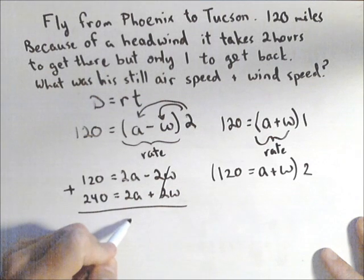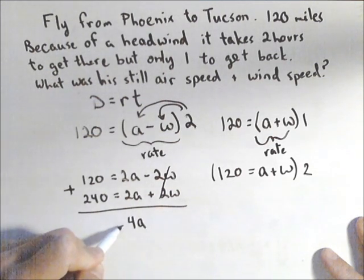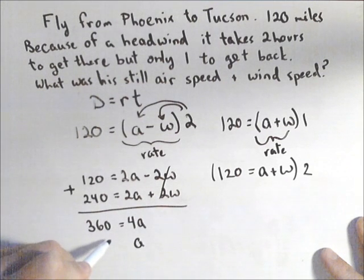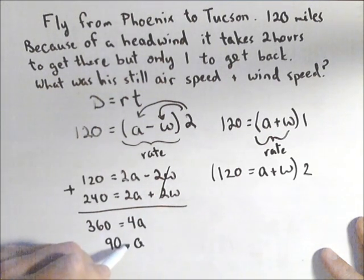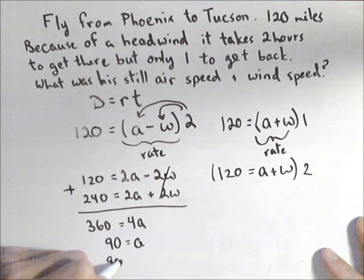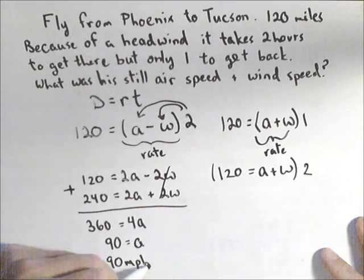Because the W's eliminate, and I get 4A equals 360, or dividing by 4, I get that A equals 90. And because we're miles per hour, that's 90 miles per hour was his airspeed.